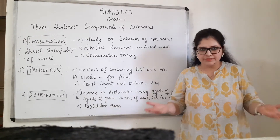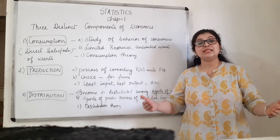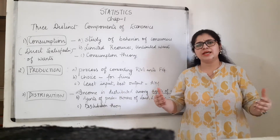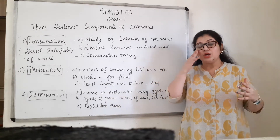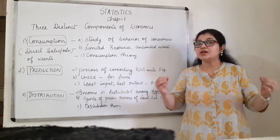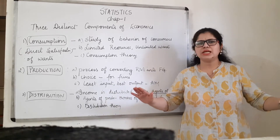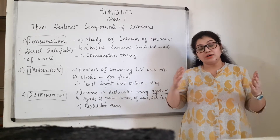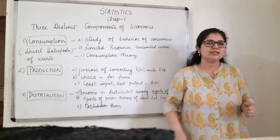The third pillar is the government. The government has laws, rules, and policies. It is the agent that helps consumers and producers to function seamlessly, without any problem. The government plays a big role in the economy.